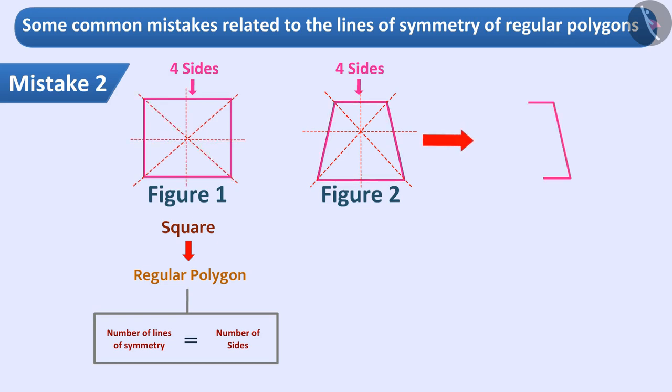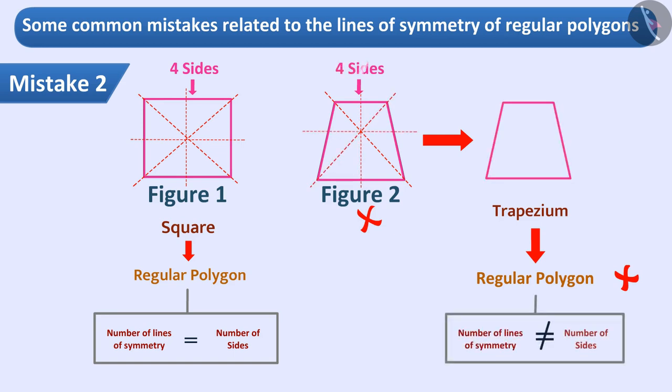The second shape shows a trapezium, which is not a regular polygon. Therefore, it is wrong to find the number of lines of symmetry in figure 2 based on the sides. Only one line of symmetry can be drawn in this figure.